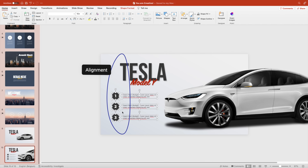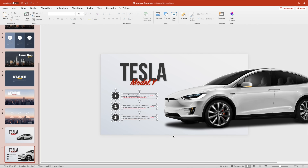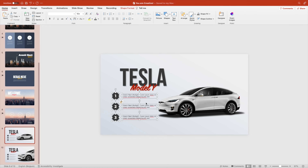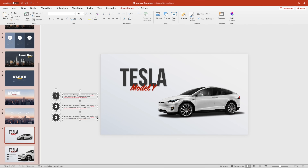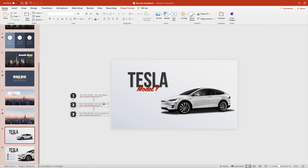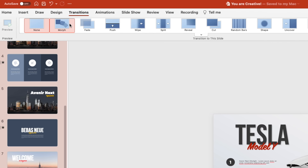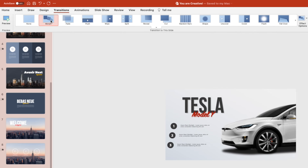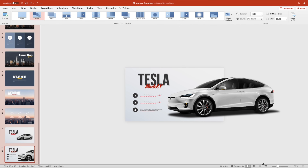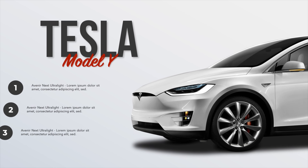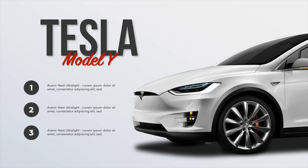Select the three bullet points and drag them to the left of the first slide. Shift them apart for the nice fly-in effect. Then go to the second slide and add a Morph transition. This way the bullet points will fly in and your car will scale. Let's preview. This is a really cool effect to create some depth to your slides.